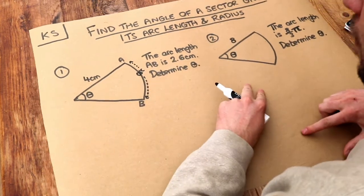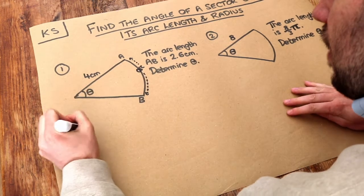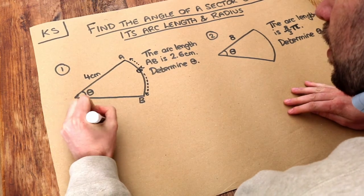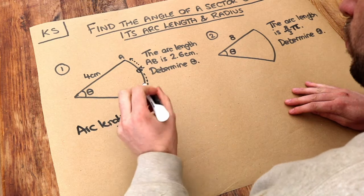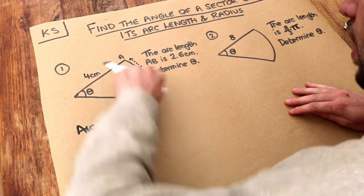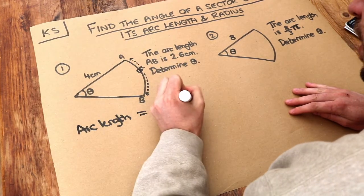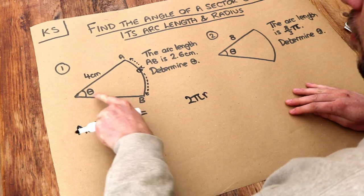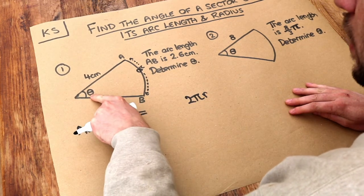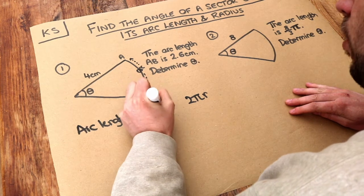Now remember there was a formula for the arc length of a circle and it was this. Arc length of a circle is equal to, well we start with the circumference of a full circle, so 2πr. And then we found the appropriate fraction of it. So what fraction of a circle do we have? Well it's θ/360ths of a circle.